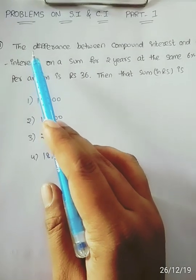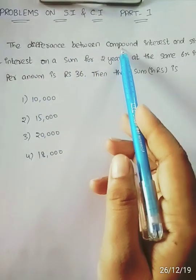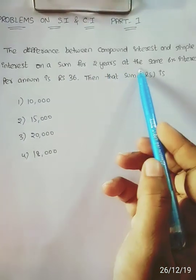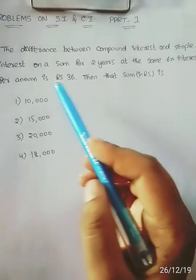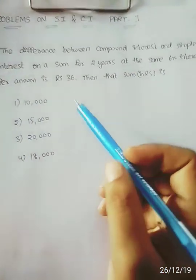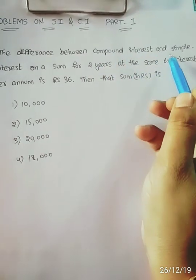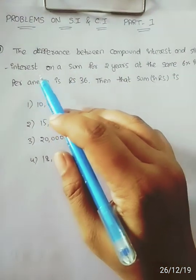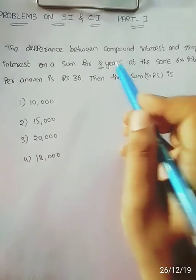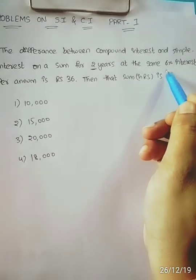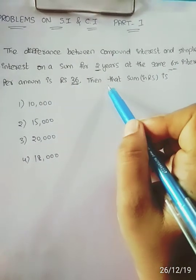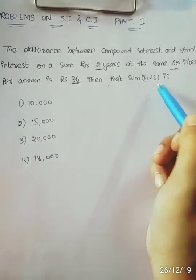My first question: find the difference between Compound Interest and Simple Interest. The sum for 2 years at 6% interest per annum is Rs. 36. Then what is the sum? We need to find the difference between Simple Interest and Compound Interest for 2 years at 6% per annum, where the difference is Rs. 36.